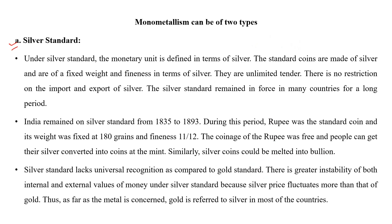In the silver standard, the monetary unit was defined as silver. The terms were defined in silver. The standard coins were made of silver, and their weight and fineness — how much silver was added, its purity — were determined in silver terms.